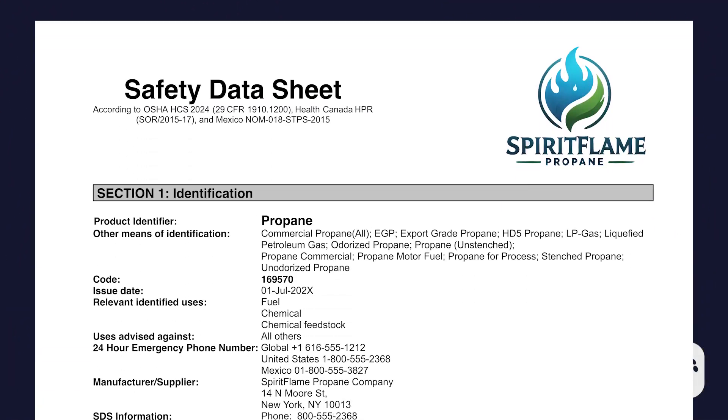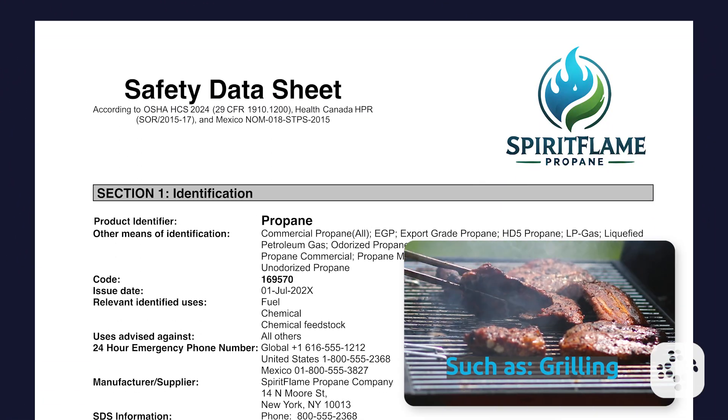Each SDS is organized into a consistent 16-section format, making it easy to find what you need when you need it. Let's break down an example SDS for propane, a common chemical used for many applications.